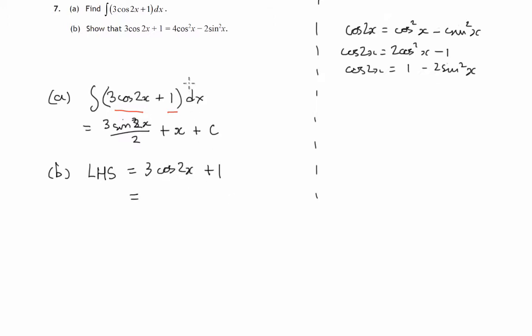Replacing cos2x, if we look at the right hand side we've got cos² and sin² appearing. The first version up here is the one that has cos² and sin², so it would be natural to replace cos2x by cos²x minus sin²x.